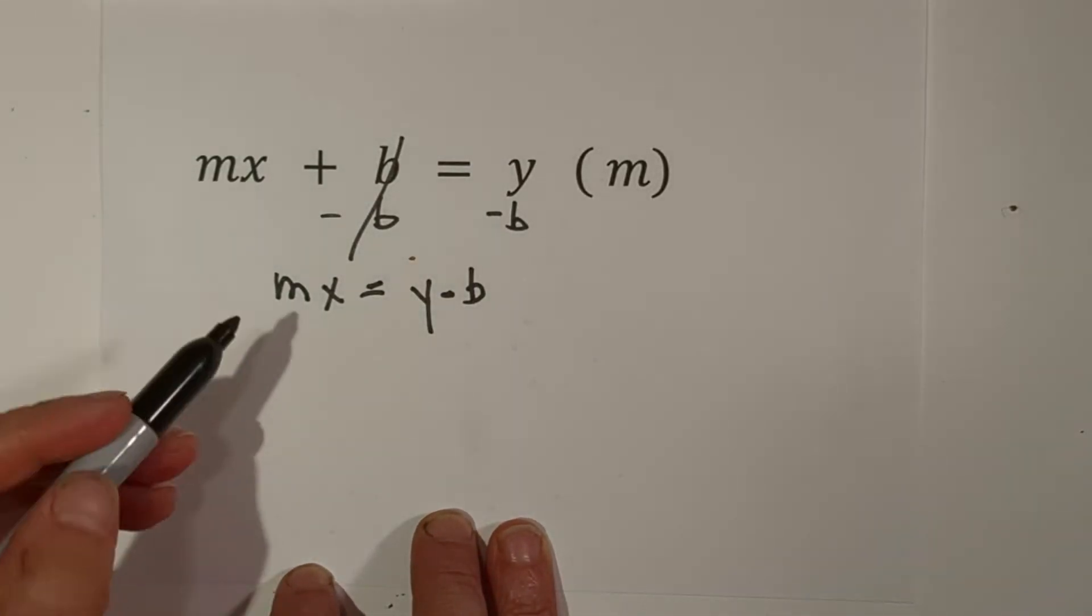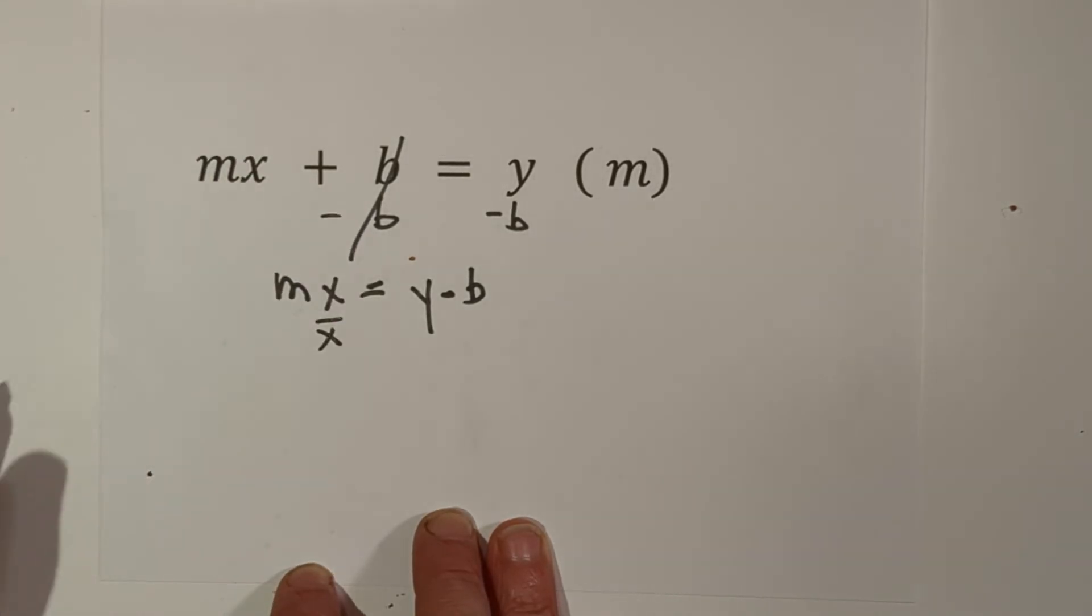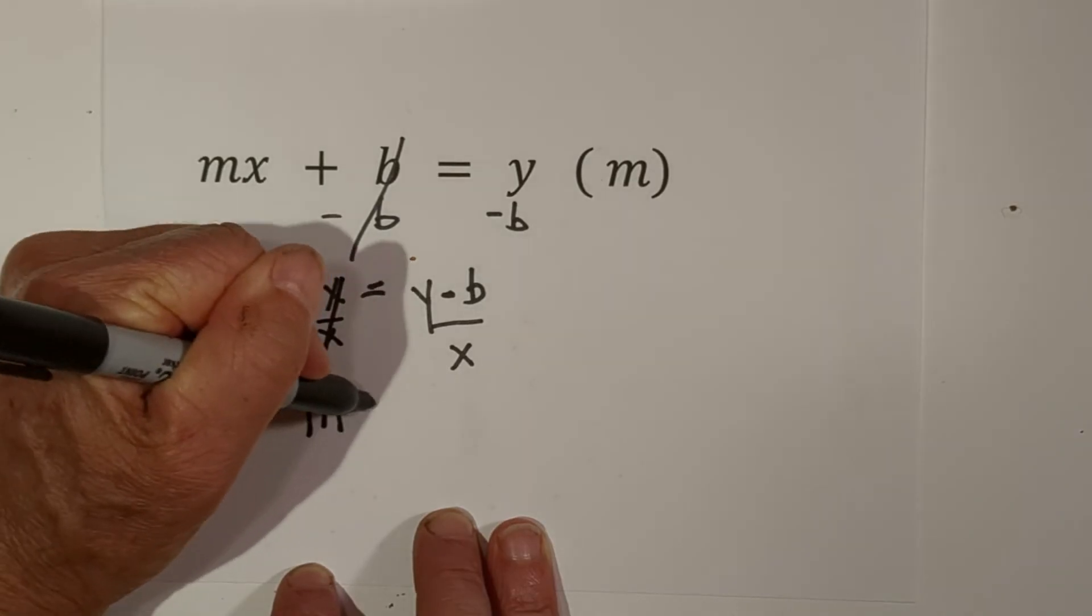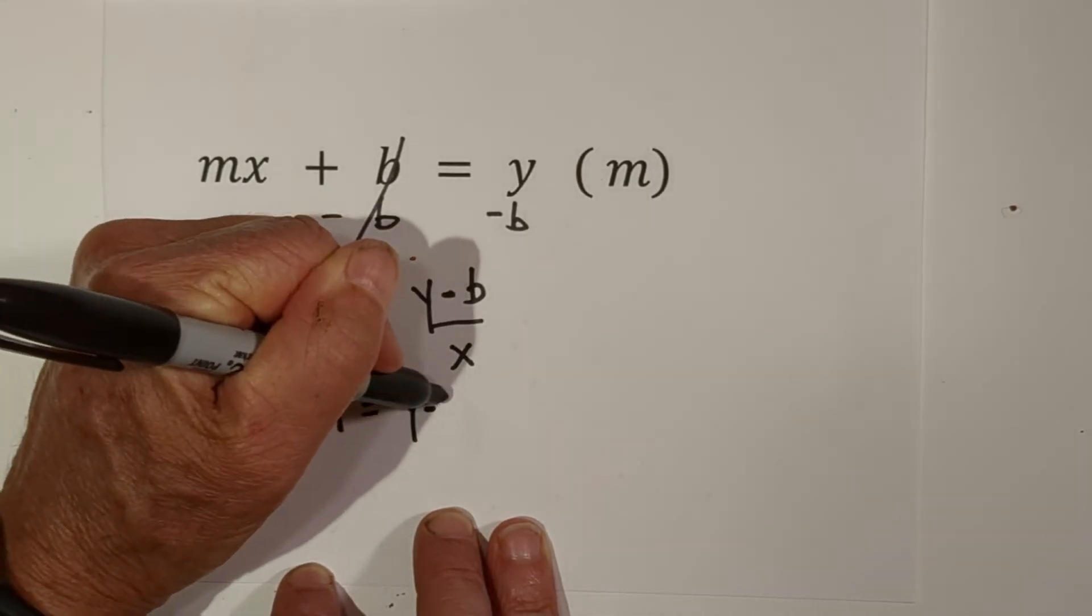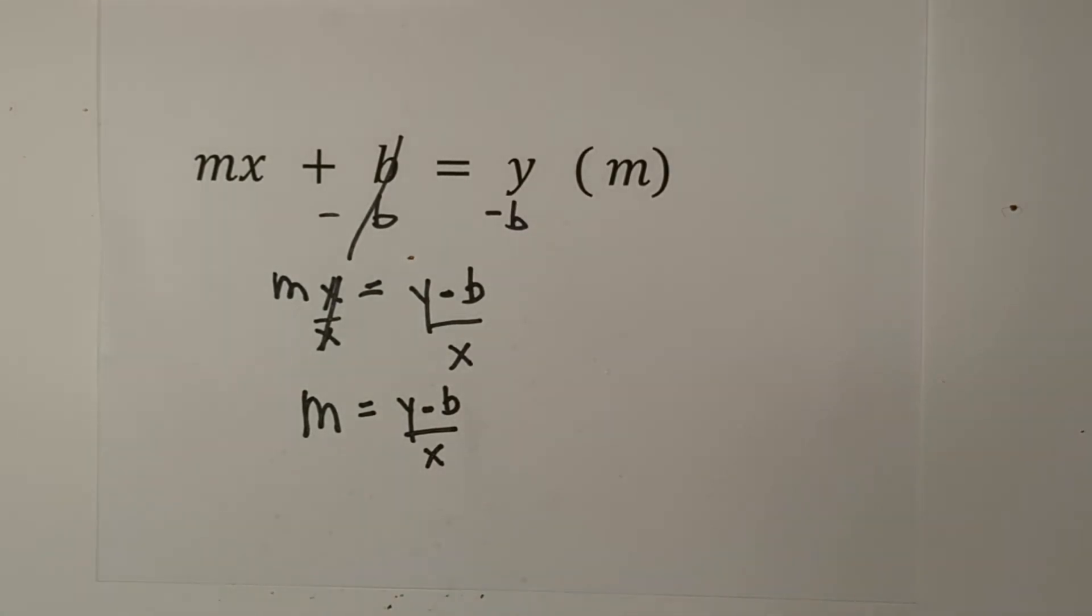Now what we need to do is remember we're trying to get the M by itself. So we're going to divide, an opposite operation. We're going to divide each side by X. So these cancel. It becomes M equals Y minus B over X. So there's the second one. Let's try one more.